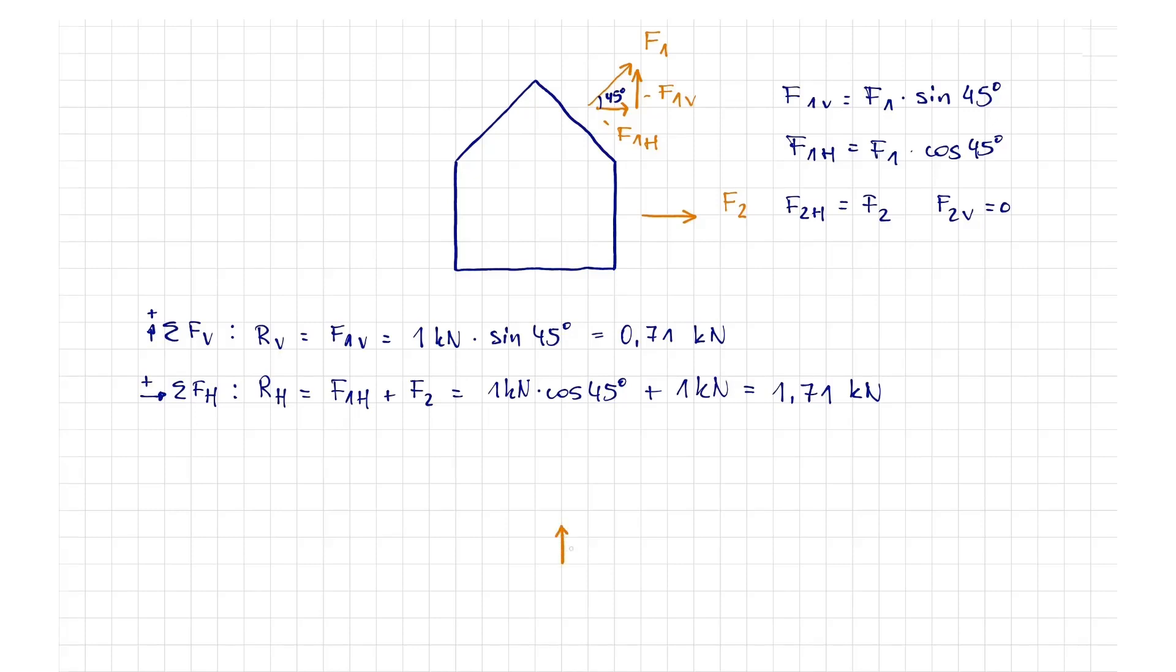RV is oriented upwards and RH to the right because both values are positive. The drawing shows this as a right-angled triangle.